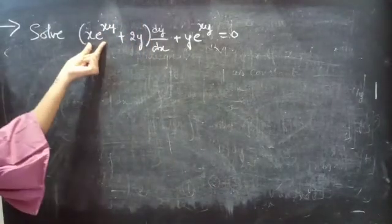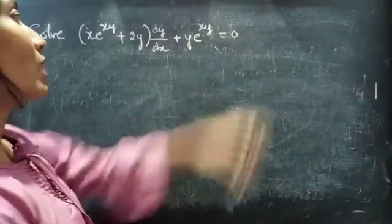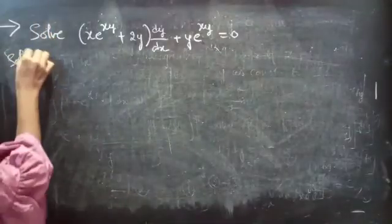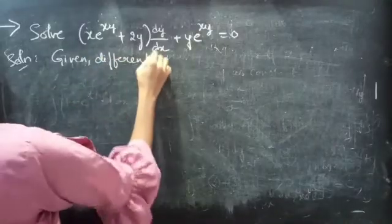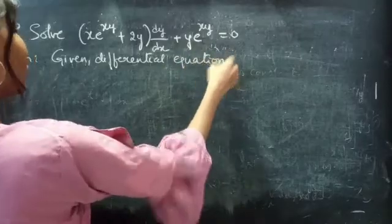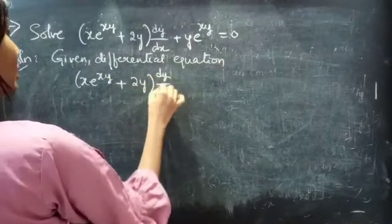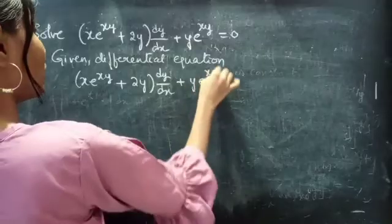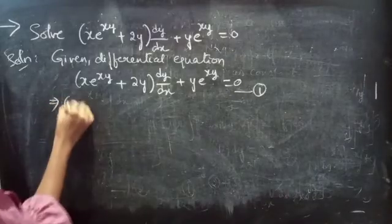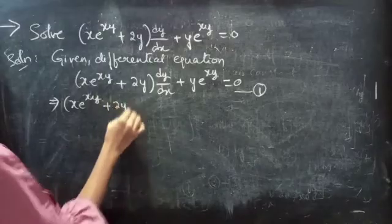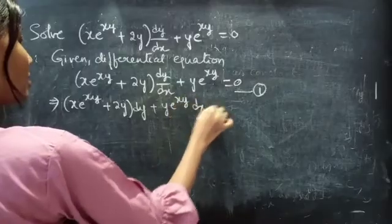Problem: solve x·e^(xy) + 2y multiplied by dy/dx plus y·e^(xy) equals to 0. You can write this as x·e^(xy) + 2y into dy plus y·e^(xy) into dx equals to 0.